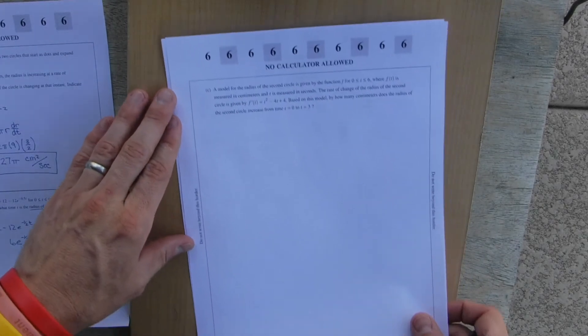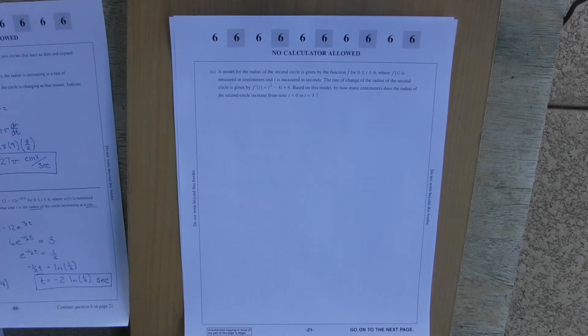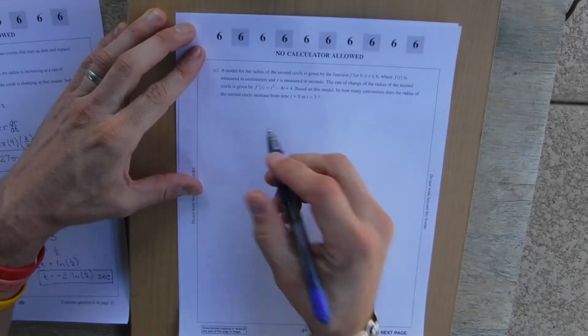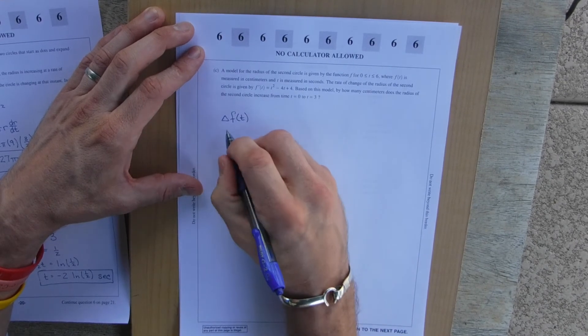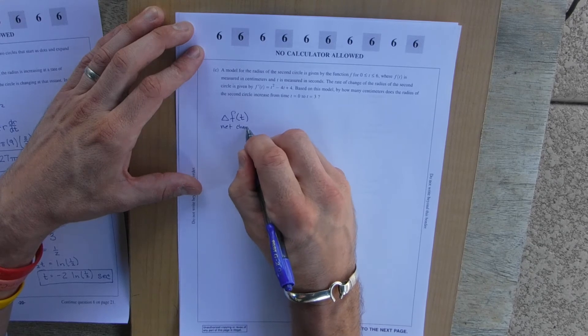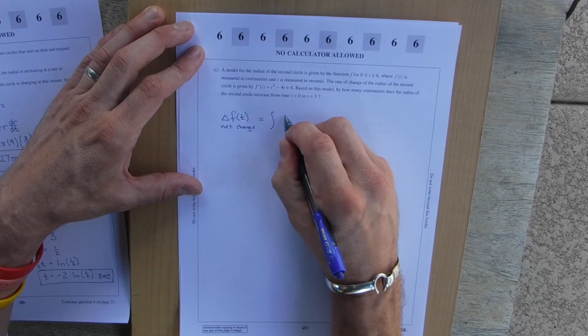Last section, let's just make sure I'm on the camera here. A model of the radius of the second circle, okay so a brand new circle, is given by the function f. Measured in centimeters, t seconds. The rate of change of the radius of the second circle, so the rate, is given by this f prime. Based on this model, how many centimeters does the radius of the second circle increase from 0 to 3 seconds? Okay, so this is how does it change, a.k.a. net change. So if you recall, the net change in something, like Δf(t), net change, is equal to the integral of its derivative.